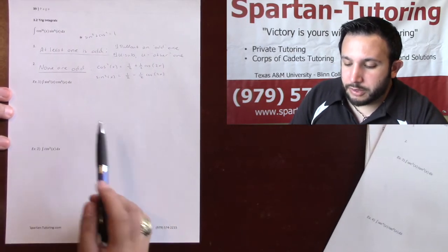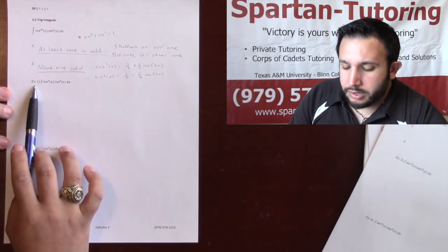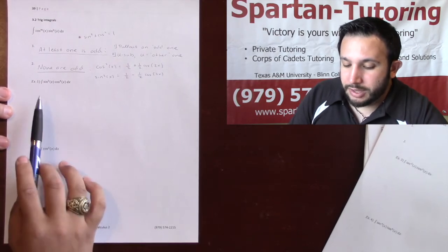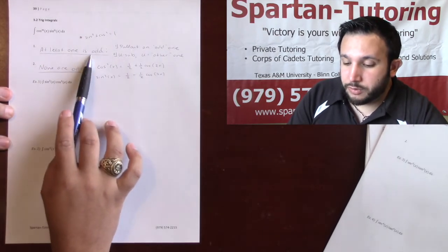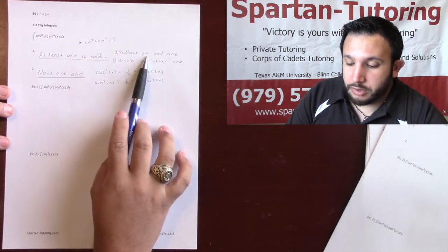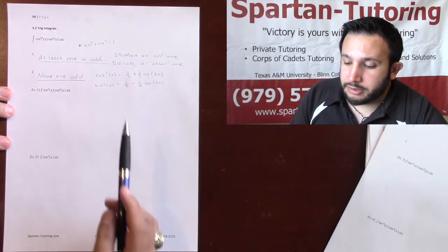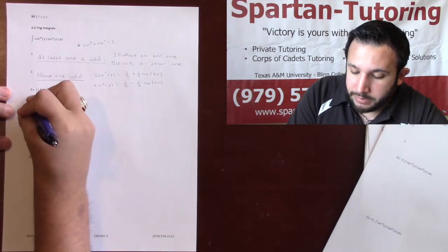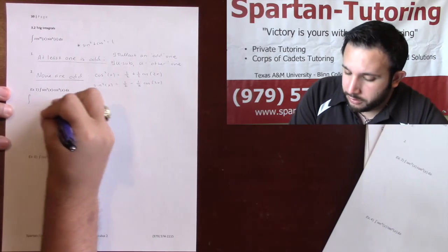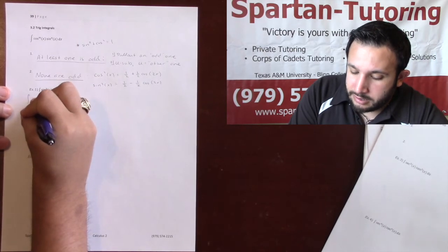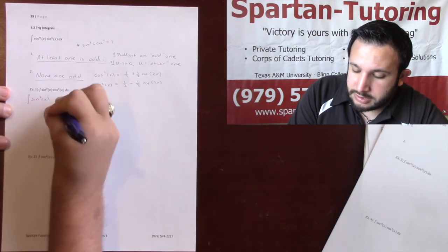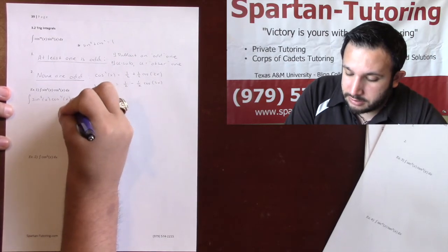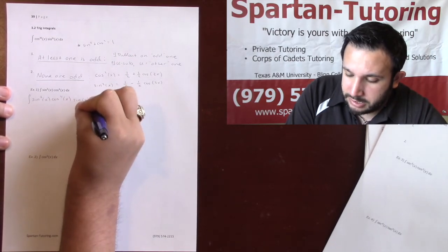Let's take a look at example one. I want to integrate sine cubed times cosine to the fourth. This is a case where at least one of them is odd, so the first thing I'm going to do is pull out an odd one. Since sine is odd, I'm going to pull out a sine. So this becomes the integral of sine squared x times cosine to the fourth x times sine x dx.